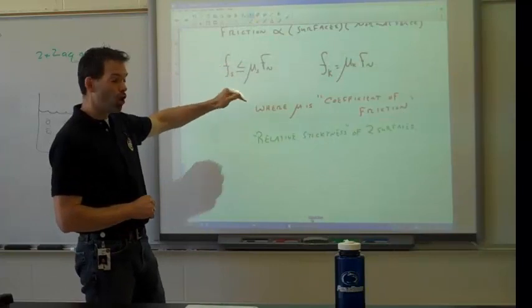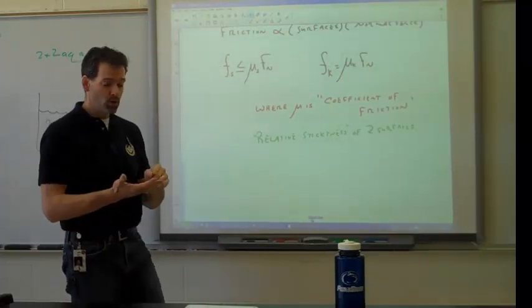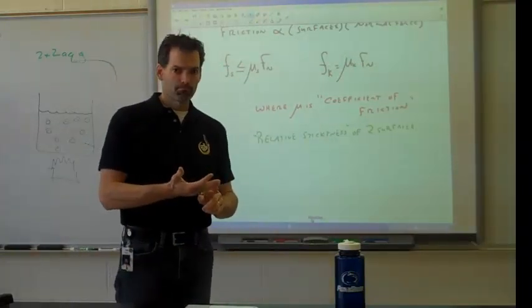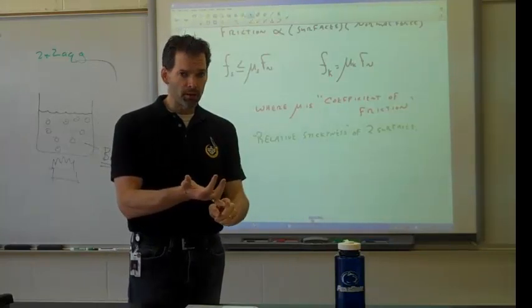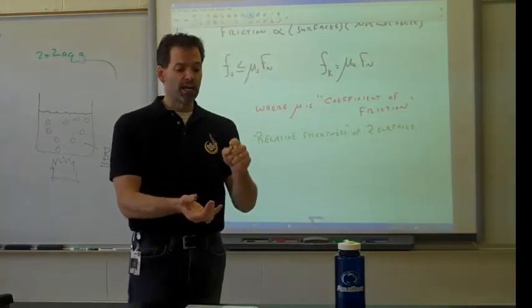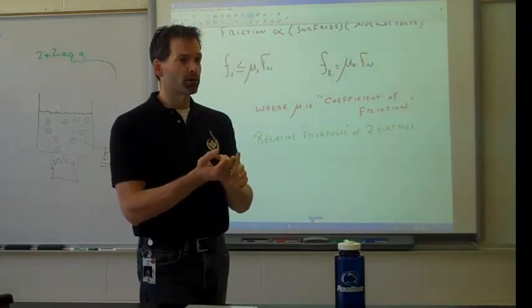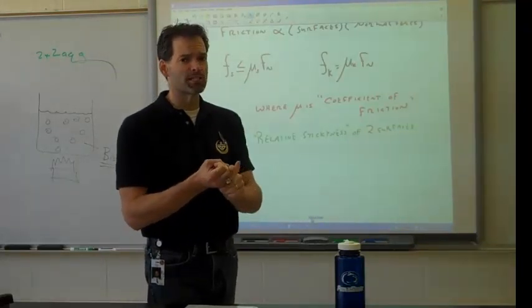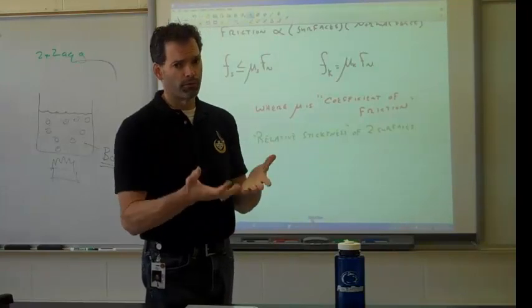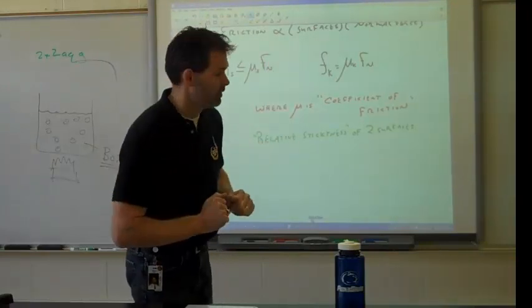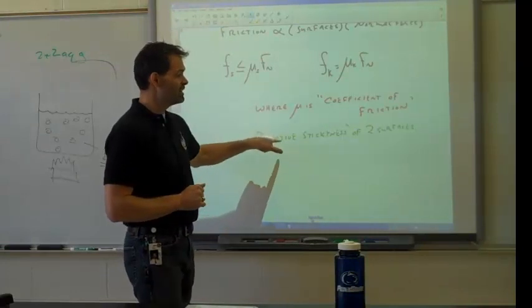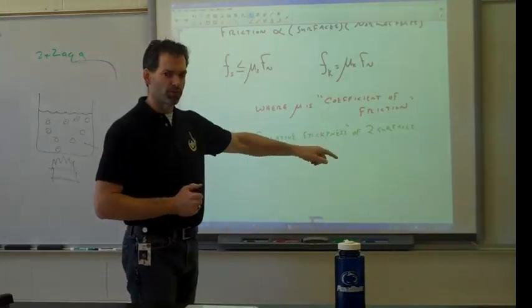And then mu again is our coefficient of friction. Mu is a constant. It's either given to you in a problem, or asked you to solve for it. If I don't give you mu, or ask you to solve for mu, you can assume that the surfaces are smooth, therefore frictionless, yay, you don't have to know anything that's cracked. Mu is basically the relative stickiness of your two surfaces. How much do they want to bond together?